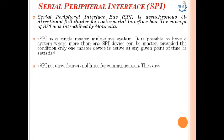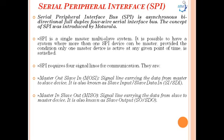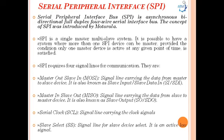SPI requires four signal lines for communication with slave devices. First is MOSI (Master Out Slave In), which carries data from master to slave, also known as slave data in. Second is MISO (Master In Slave Out), which carries data from slave to master, also known as slave output. Third is the serial clock (SCK), which carries clock signals. Fourth is the Slave Select (SS), which selects the slave device and is an active-low signal.